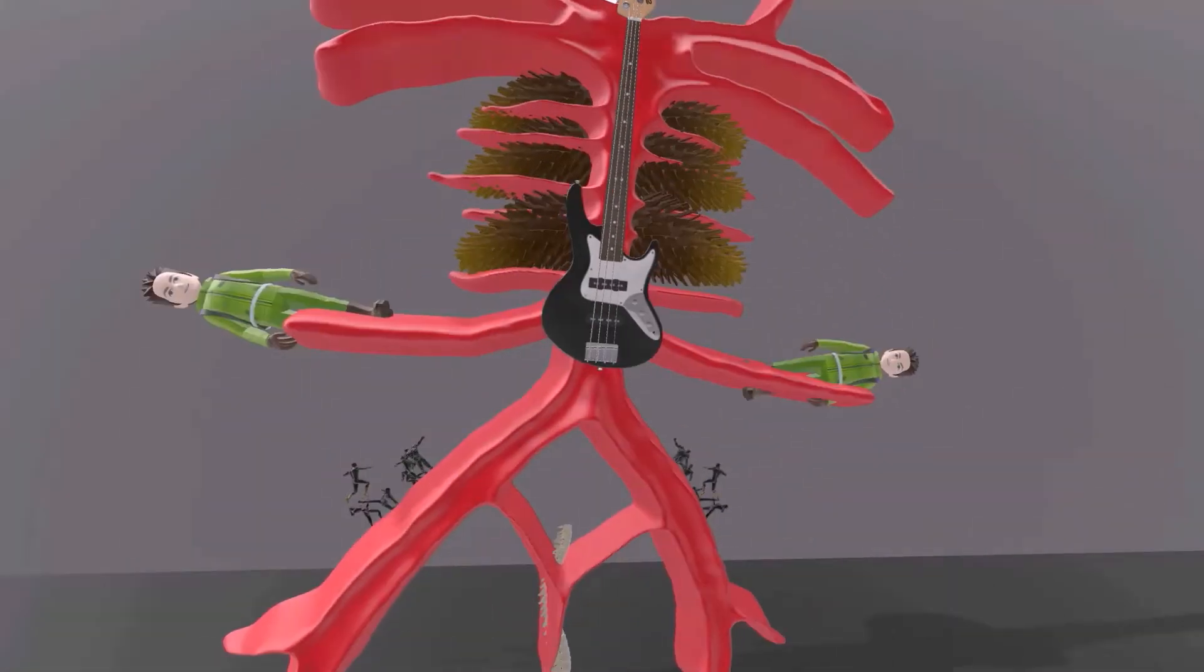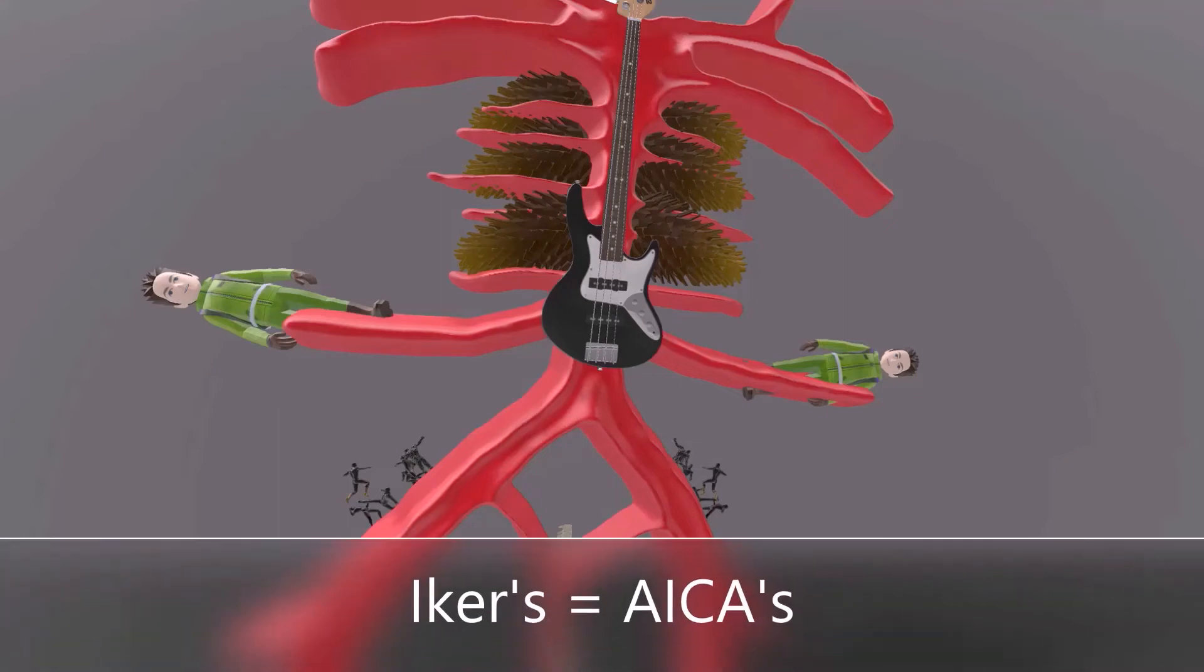Right on the sides going far out are these hikers, or the ikers. We'll call them the ikers. Ikers for AICA. This is AICA over here, the anterior inferior cerebellar arteries.